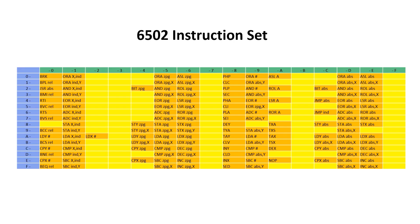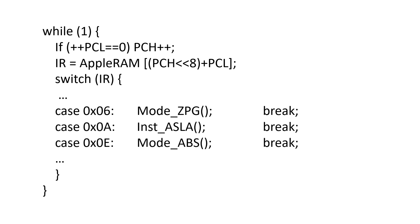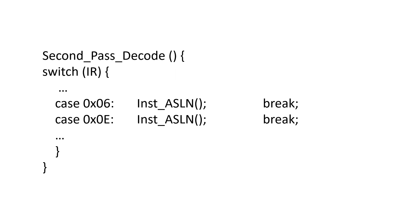Now let's look at three ASL instructions: ASL zero page, ASL A, and ASL absolute. We put them in our decode switch statement. Note that the upper and lower ones actually call an addressing mode while the middle one directly calls an instruction — we're allowed to mix them up like this. It does mean we need a second pass decode for the zero page and for the absolute addressing form of the instruction.